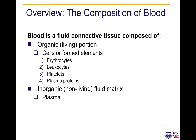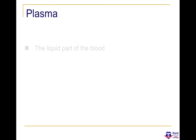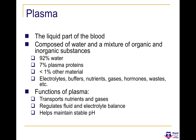Blood is a fluid connective tissue composed of two things: an organic portion and an inorganic portion. The organic portion includes erythrocytes (red blood cells), leukocytes (white blood cells), platelets involved in clot formation, and plasma proteins. The inorganic side is formed via plasma — the liquid part of the blood — which is composed of water and a mixture of organic substances.